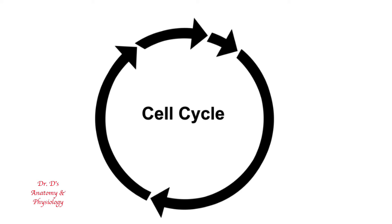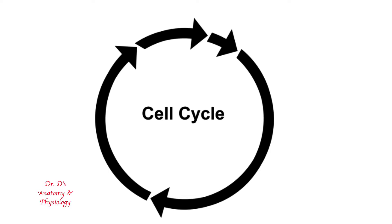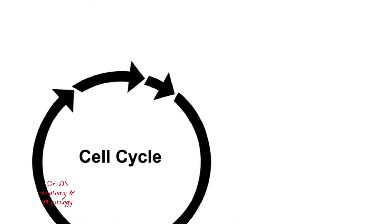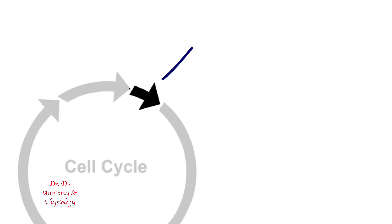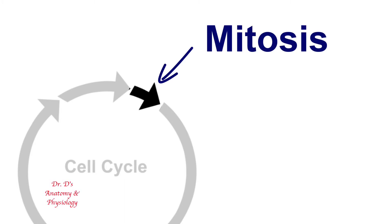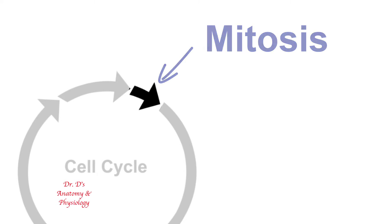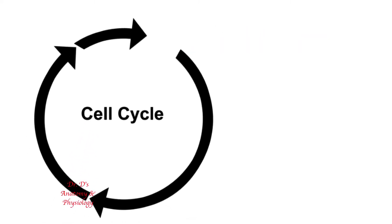Mitosis is part of the cell cycle, which is basically the alternation of growth and/or function with cell division. Here the cell cycle is schematically represented with the phases shown by arrows. No matter how fast or frequent this cycle, mitosis is the shortest part of the cycle. The term mitosis comes from the Greek word mitos, which means thread, reflecting the fact that during mitosis the chromosomes become visible and thread-like. The remainder of the cell cycle is taken up by the phase between mitosis.